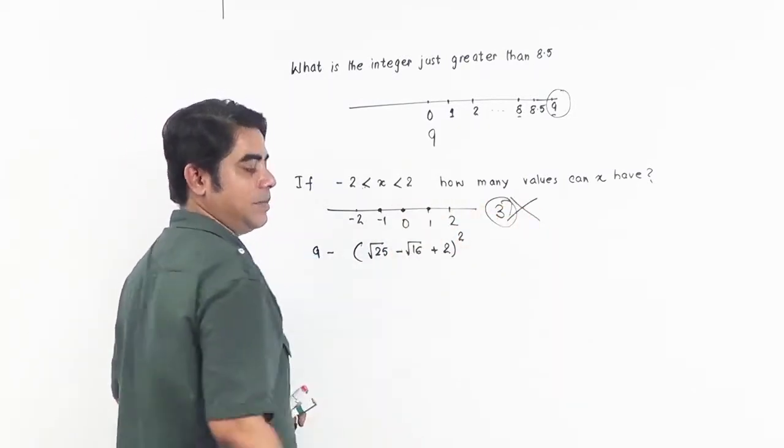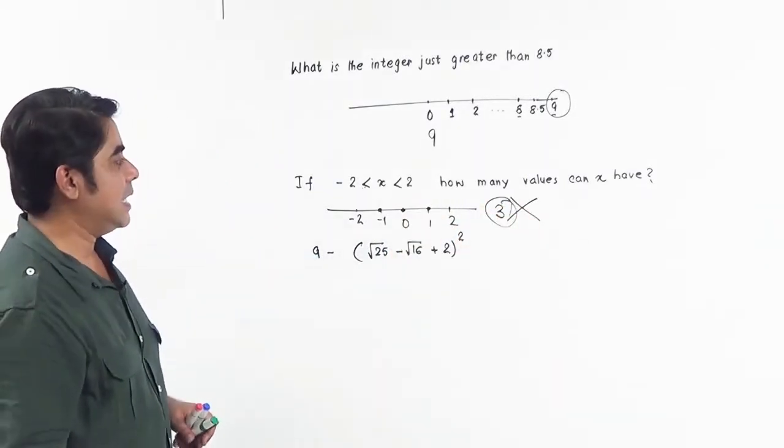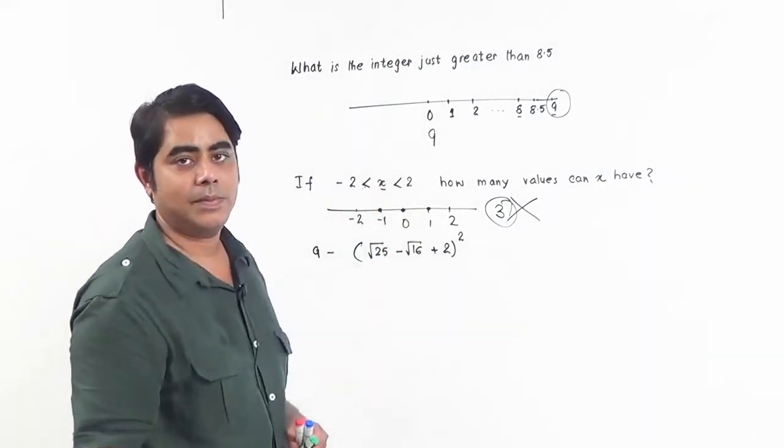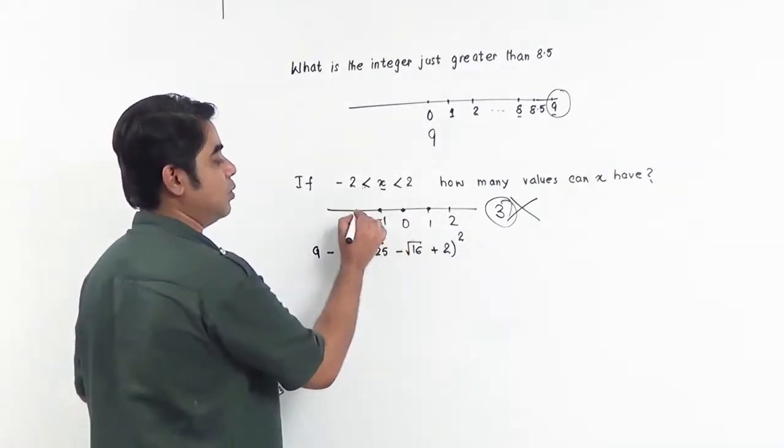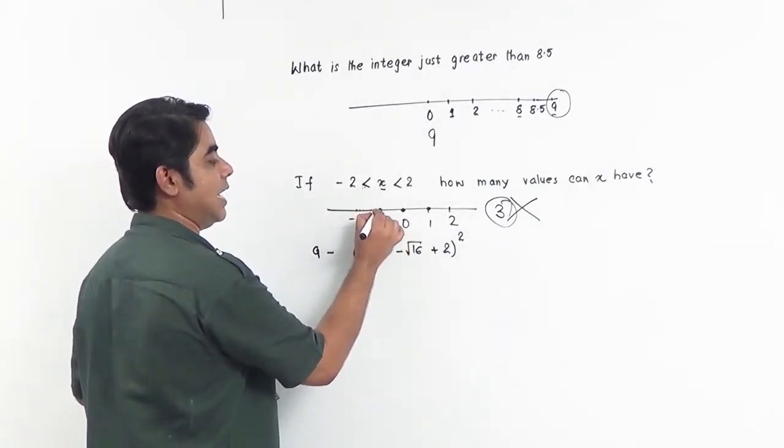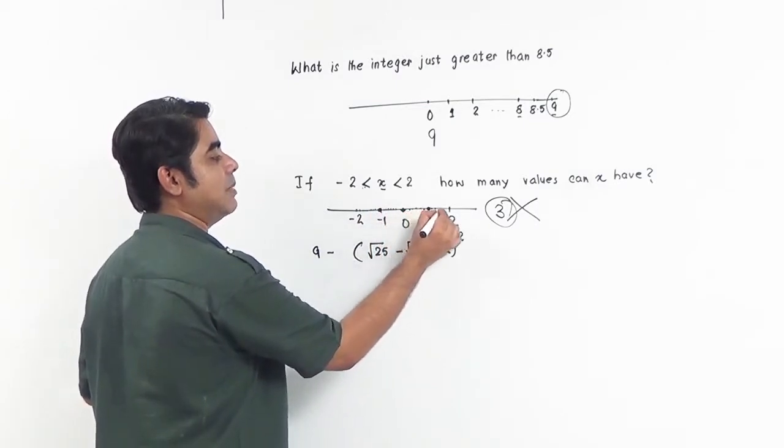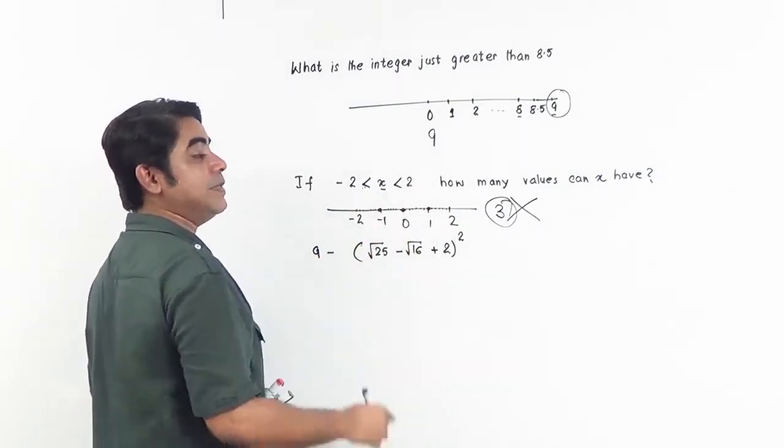The idea is nobody told you that x is an integer. That means from minus 2 to plus 2, all the values you have on the number line, all the points you have, are solutions to this. That means the number of values that x can have is actually infinite.